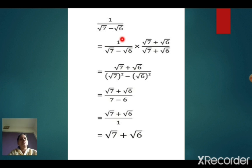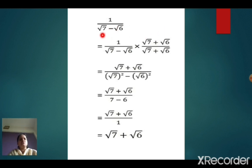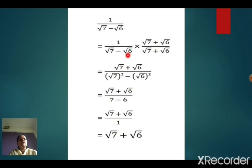This is a new word for you. What is the conjugate of the denominator? Conjugate means: whatever the sign is given — here it is minus — just take the opposite sign and write the term. That means the conjugate of root 7 minus root 6 will become root 7 plus root 6.